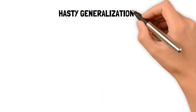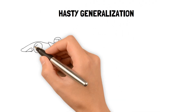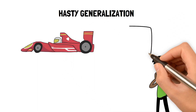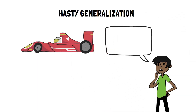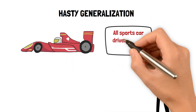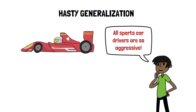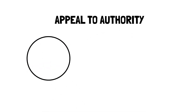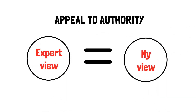Hasty generalization occurs when a person draws a conclusion based on limited evidence or experience, without considering other factors or contexts that could affect the conclusion. Appeal to authority occurs when a person relies too heavily on the opinions or beliefs of an authority figure, without questioning the evidence or reasoning behind those opinions.